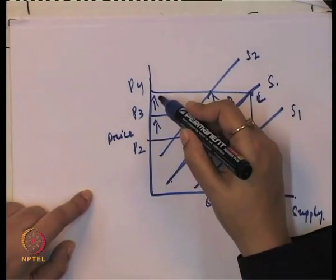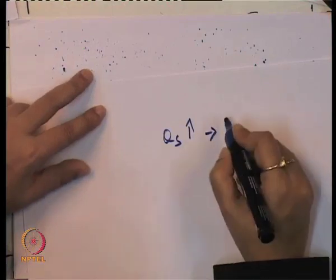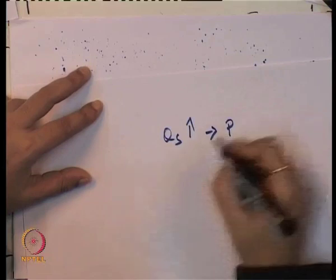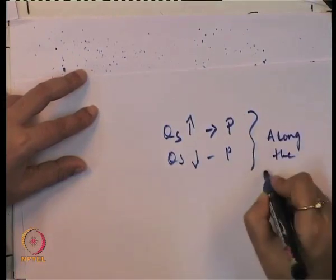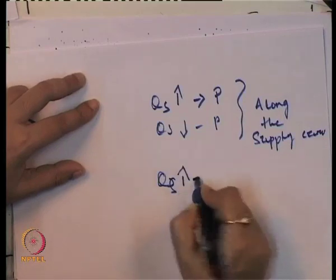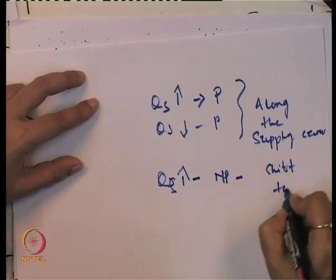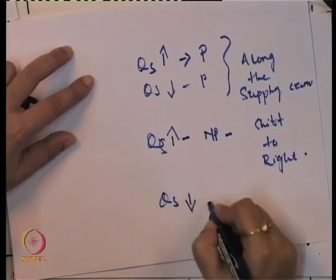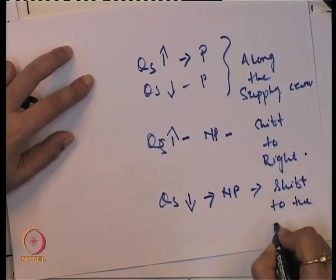If there is a decrease in price from P4 to P3, the movement is again along the supply curve from point B to point C. Two points to remember in the case of supply: if quantity supplied is increasing or decreasing due to a change in price, the movement is along the supply curve. But if quantity supplied is changing due to non-price determinants, there is a shift of the supply curve — to the right for an increase, to the left for a decrease.